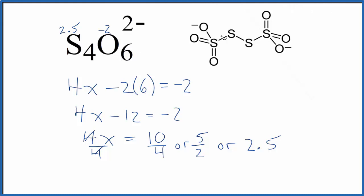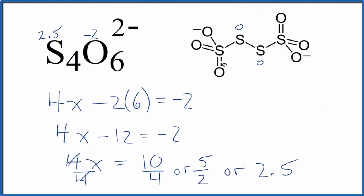The problem is that these sulfurs are different. This sulfur here is bonded to sulfur on either side. Same here, bonded to sulfur on either side. So for this sulfur, we don't know its oxidation state. We'll call that X again.